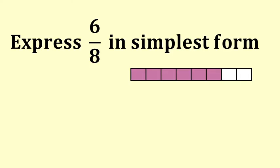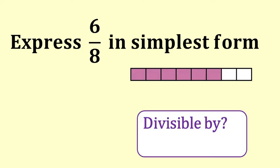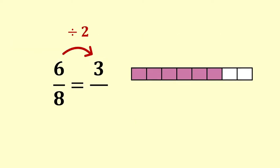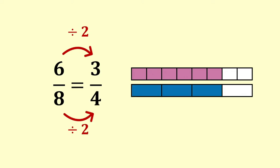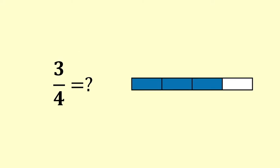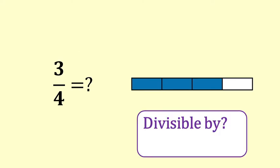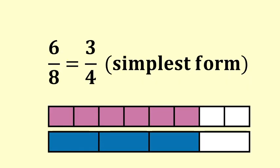Express six eighths in simplest form. What number goes into six and into eight? Both six and eight are even, so two must go into both of them. Six divided by two is three. Eight divided by two is four. We get three fourths. What number goes into four and three? There isn't one. Two goes into four but it doesn't go into three. Only three goes into three and three does not go into four. So three fourths or three quarters is in simplest form.